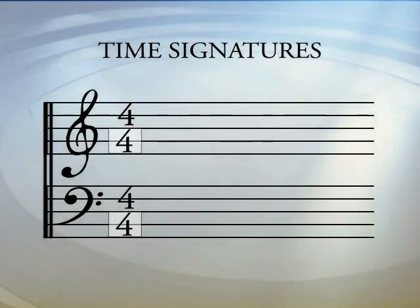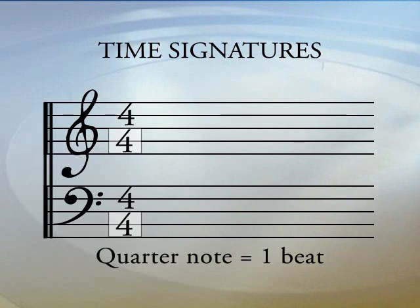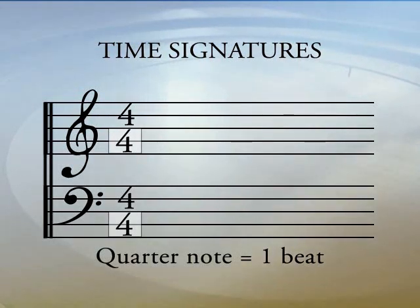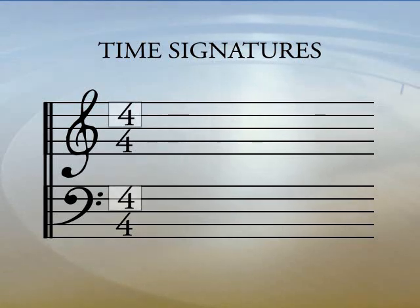The lower number of the fraction tells us what kind of note receives one beat or downbeat as some people call it. The upper number of the fraction tells us how many beats are in one measure.